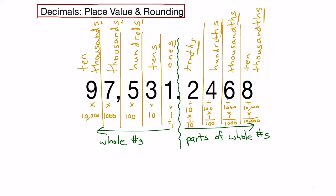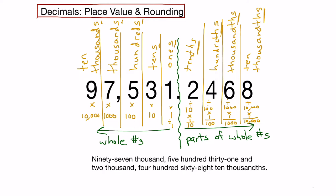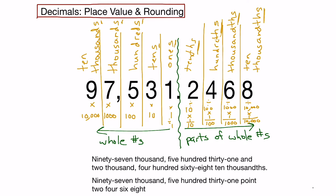So how do we say and write this number? We start on the left-hand side: this is 97,531 — and we use the word 'and' when talking about a decimal — 2,468 ten-thousandths. That's quite a mouthful, so there's another way to say it: 97,531, and then instead of 'and' we use the word 'point' and just say the digits 2, 4, 6, 8.